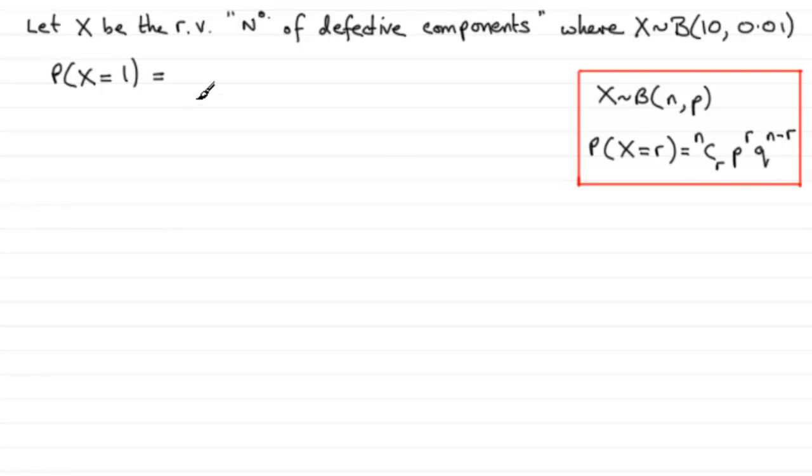If we apply that formula here, for n it's going to be 10, so we have 10C1. That's 10 choose 1. The probability of success is 0.01, raised to the power of 1, because we want just one success here—one defective component.